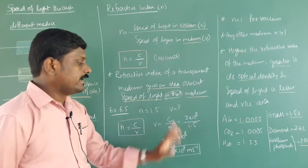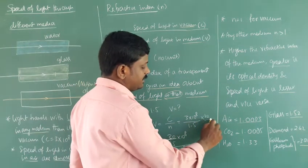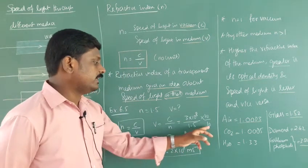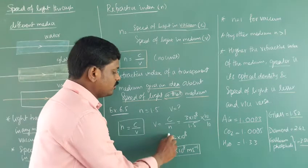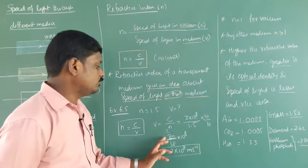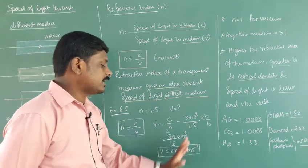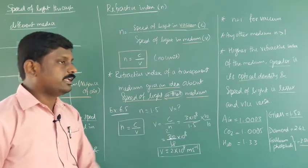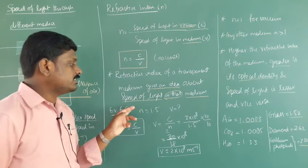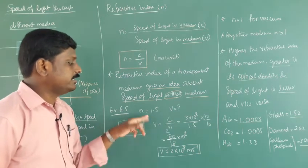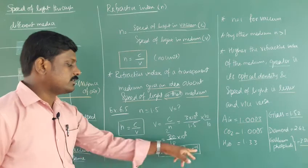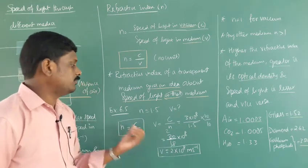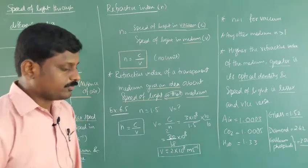To simplify, multiply numerator and denominator by 10: 3×10⁸ divided by 1.5 becomes 30 divided by 15, which equals 2. So V = 2×10⁸ meters per second. The speed of light in vacuum is 3×10⁸, but in this glass medium it is 2×10⁸ — it moves at a lesser speed.